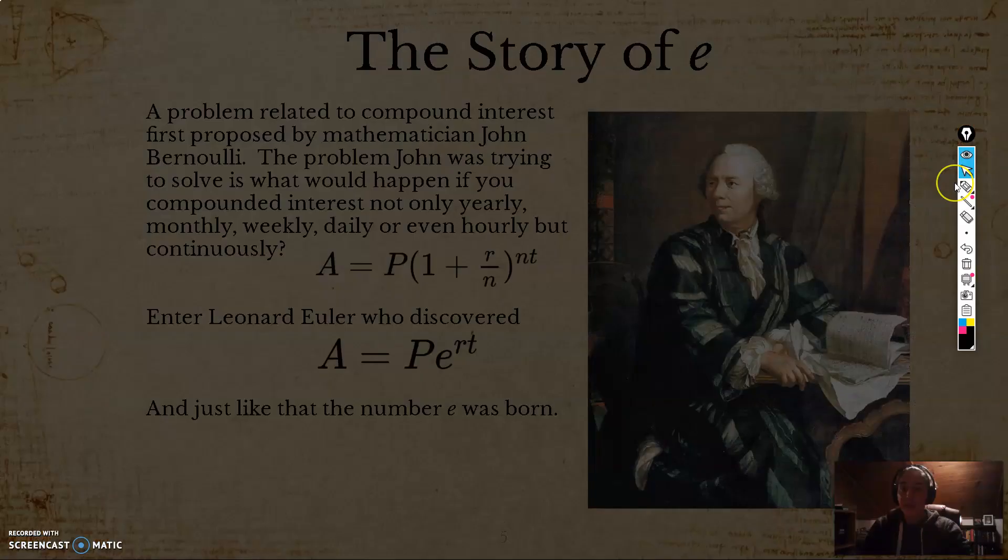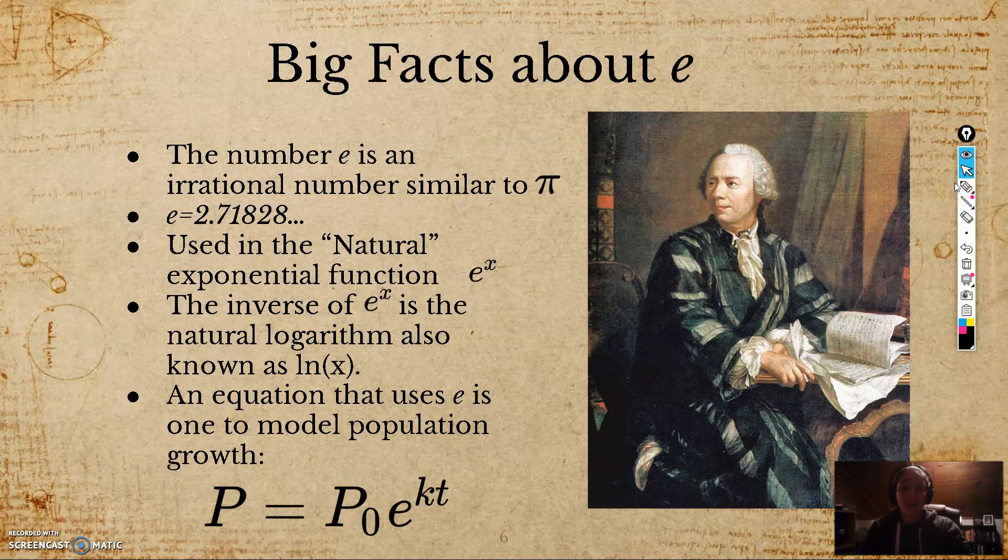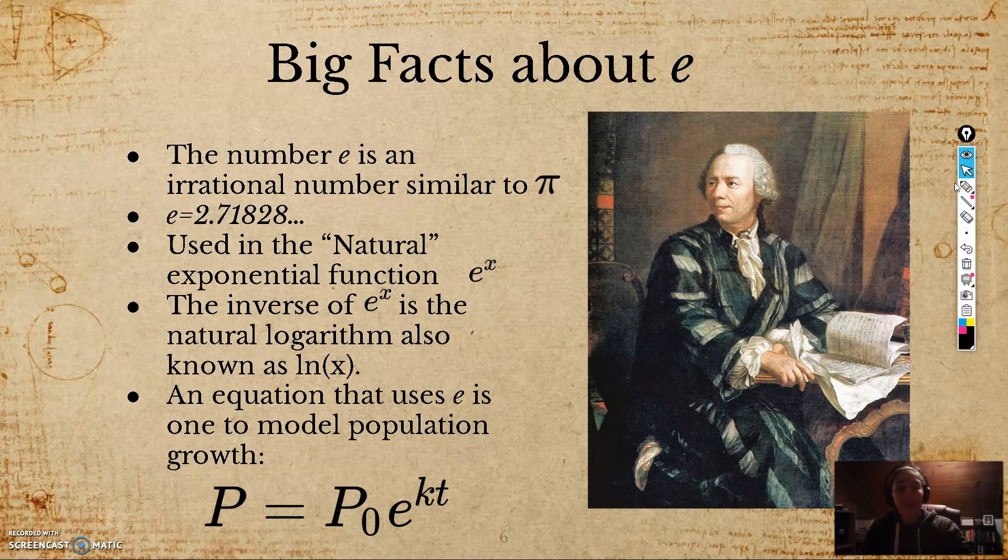Let's see some facts about e, or also known as big facts about e. So the number e, it's an irrational number, similar to its more popular, more famous counterpart, pi, which is also an irrational number. It's approximately equal to 2.71828 dot dot dot, goes on forever and never repeats.